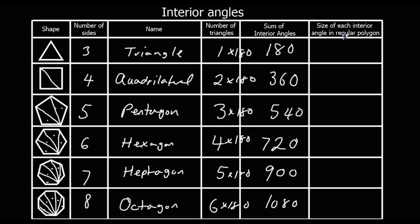Now here I've got the size of each angle in a regular polygon. Regular means they're all the same — each side the same length, each angle the same. That's a regular polygon. So here we just have to divide by how many sides there are. 180 shared out between three angles: 180 divided by 3 is 60. 360 divided by 4 is 90. Then 540 divided by 5 is 108 degrees.